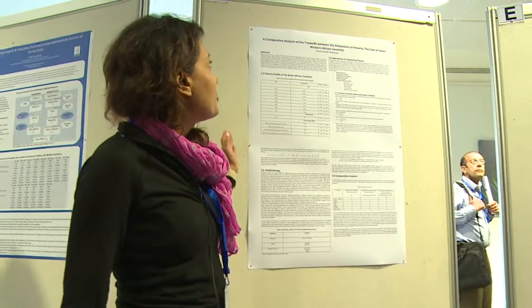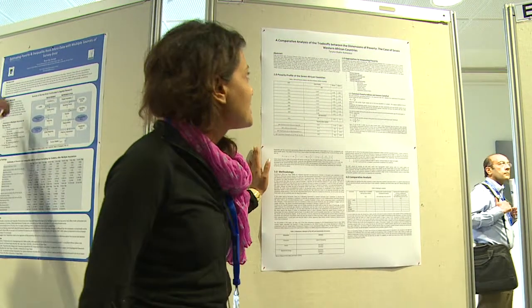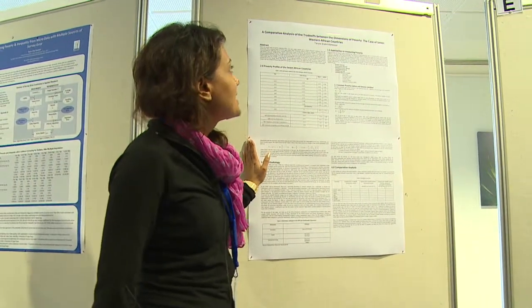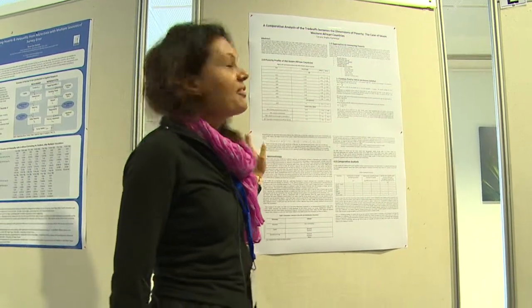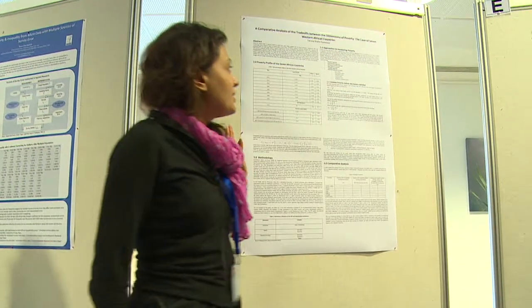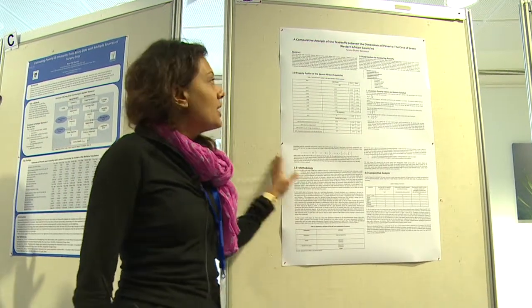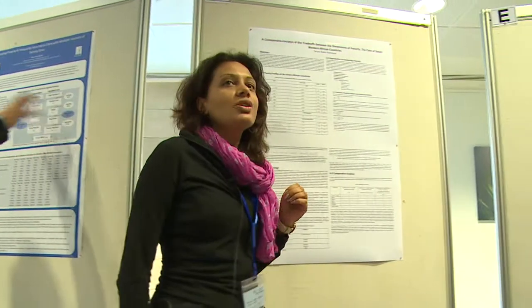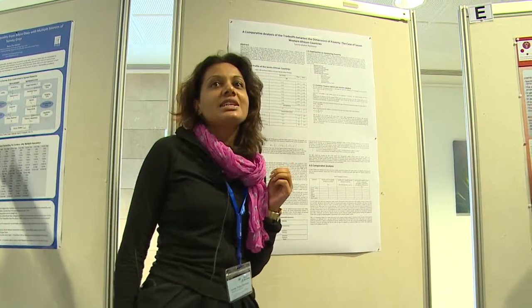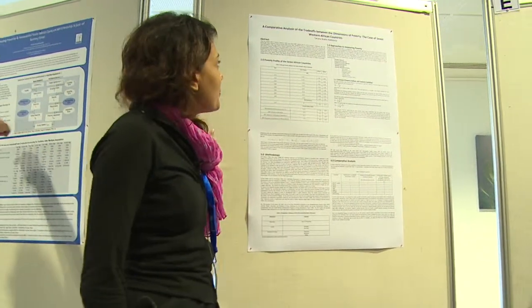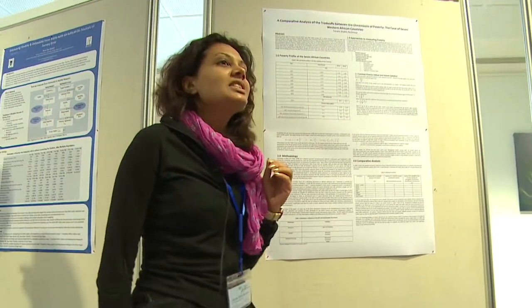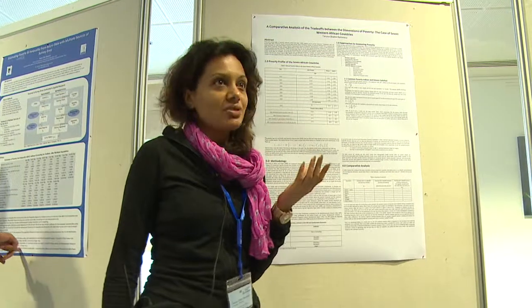This paper is on the comparative analysis of the trade-off between the dimensions of poverty — the case of seven Western African countries. This is a working paper. Usually authors use unidimensional poverty indices, but with time many authors have found that poverty is multidimensional, so it is better to use multidimensional indices.